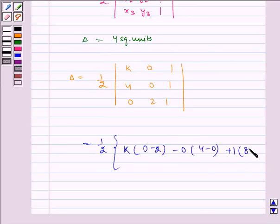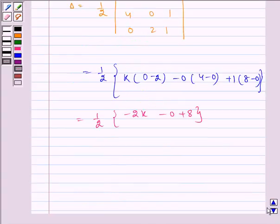Which is equal to half into minus 2k minus 0 plus 8. Which is equal to half into minus 2k plus 8.